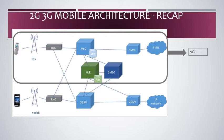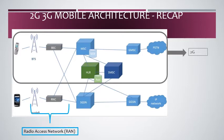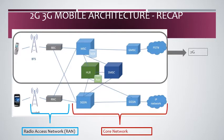Similarly, for a 3G network, when a mobile call is made it goes to Node B, the RNC (Radio Network Controller), and then the core network elements. This network is divided into two parts: the Radio Access Network (RAN), which is a combination of BTS and base station controller in 2G, or Node B and Radio Network Controller in 3G, and the remaining network which falls under the core network.